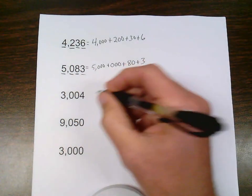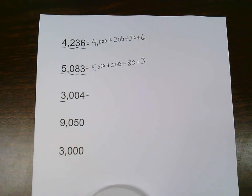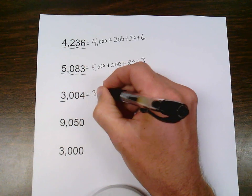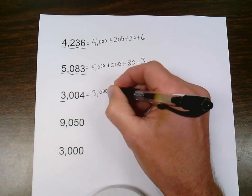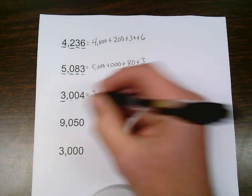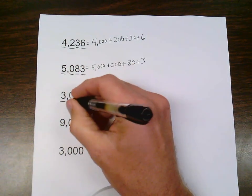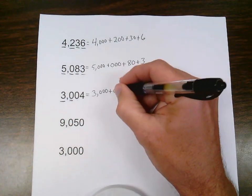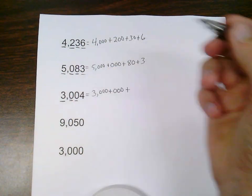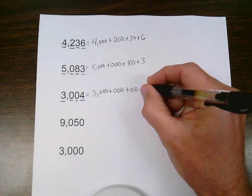And next one, 3,004. I start off with the largest place value, which is thousands place. I have a 3 in the thousands place, so that 3 is worth 3,000. And now I have two zeros in a row, so I still want to keep my pattern. I still want to keep my 4, 3, 2, 1 pattern. So this zero in the hundreds place is worth 3 zeros. This zero in the tens place is worth 2 zeros. And the 4 in the ones place is worth 1.